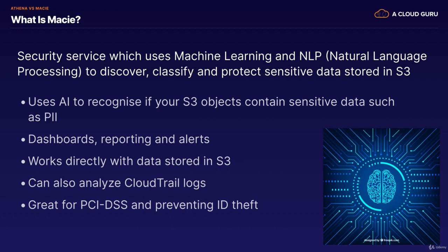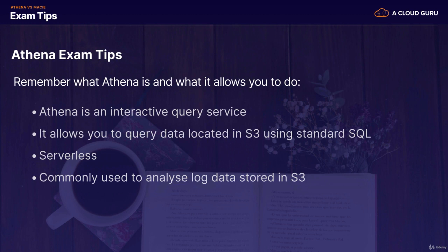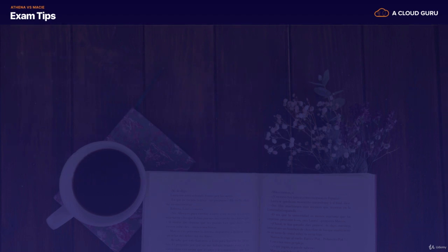You can see why people get the two confused, because Athena allows you to query your data on S3 based on SQL commands that you write. However, Macie also queries data on S3, but it uses machine learning and natural language processing to discover PII information. So going into your exam, remember: Athena is an interactive query service that allows you to query data in S3 using standard SQL. It's serverless and commonly used to analyze log data stored in S3.